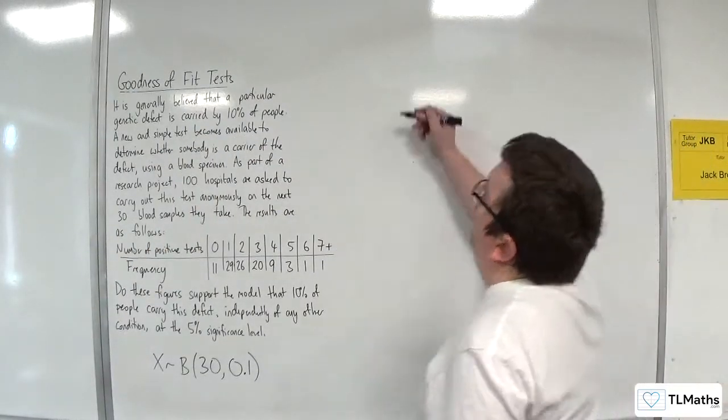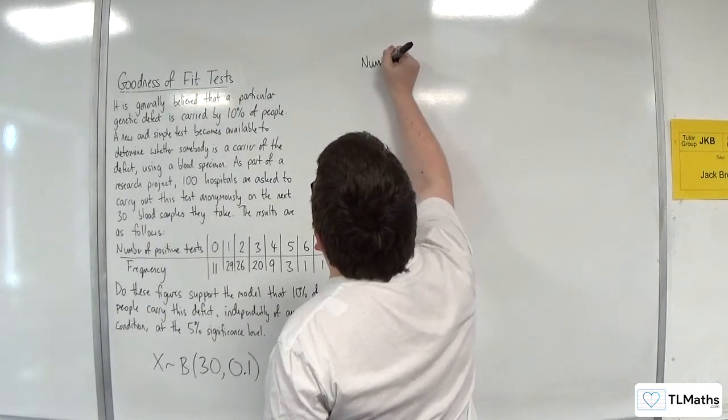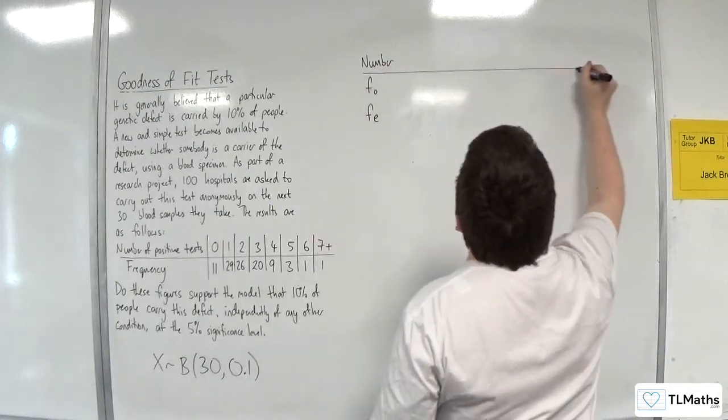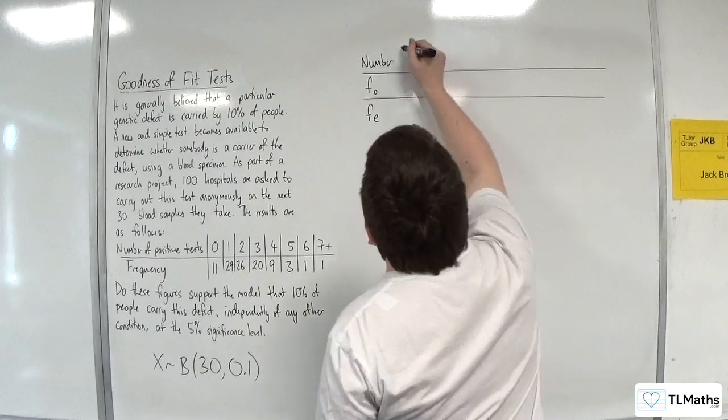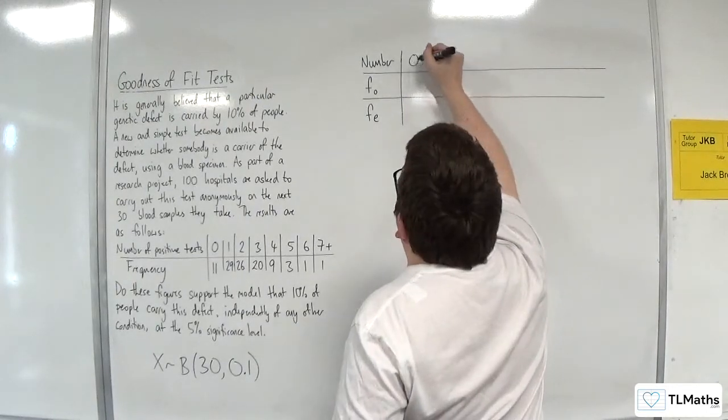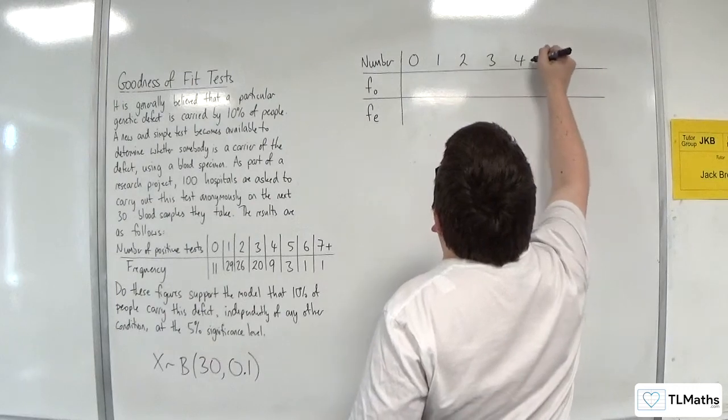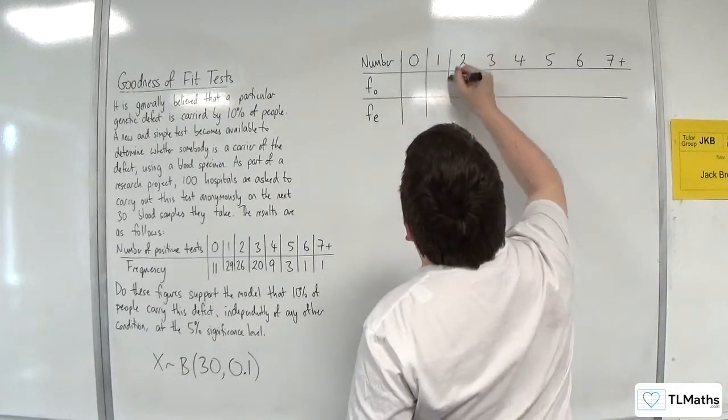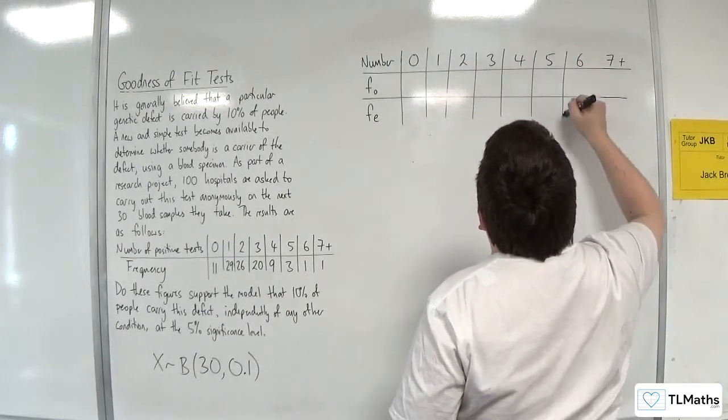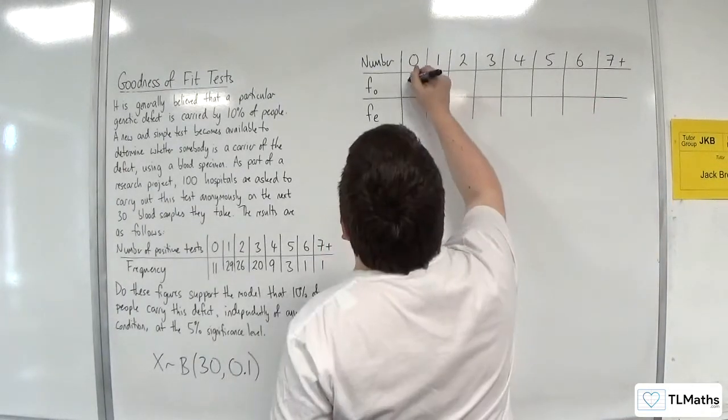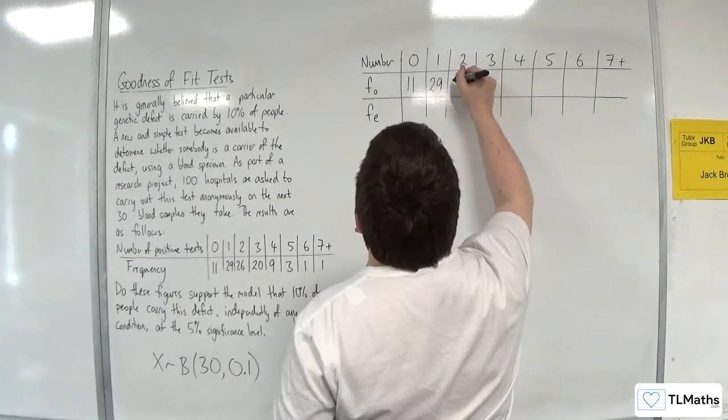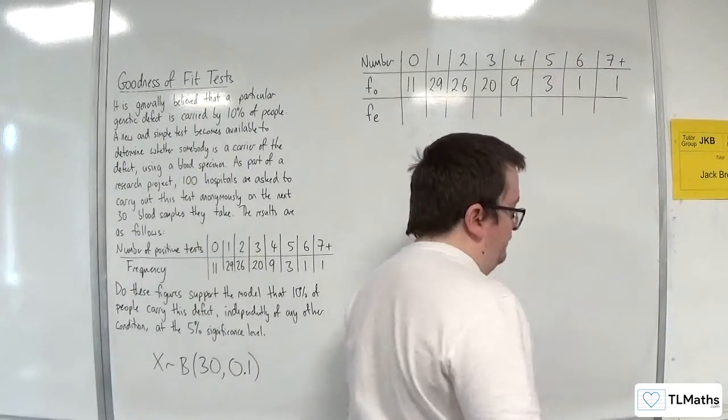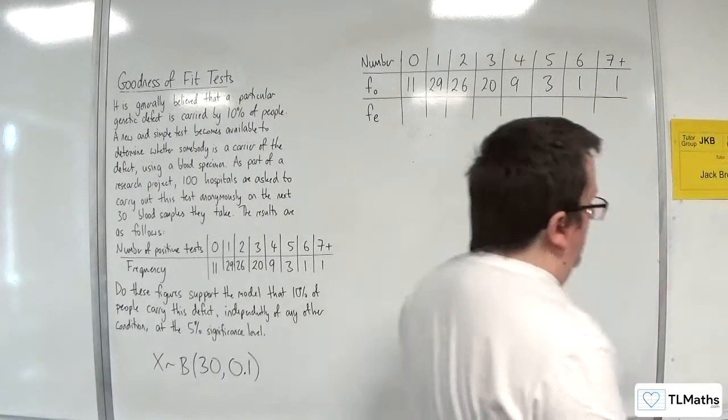So let's build up our table then. We've got number and we've got the observed frequency and we need the expected frequencies. 0, 1, 2, 3, 4, 5, 6, 7+. So the observed frequency is 11, 29, 26, 20, 9, 3, 1, 1.